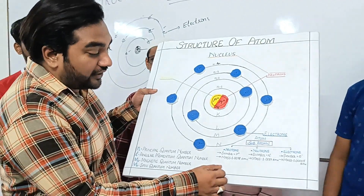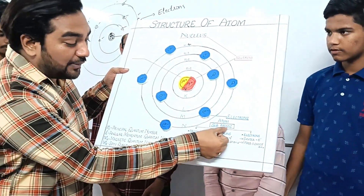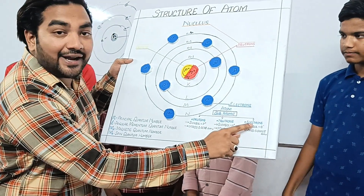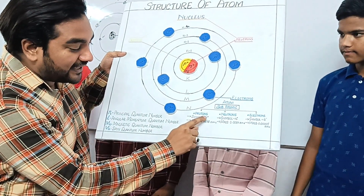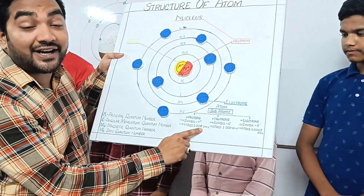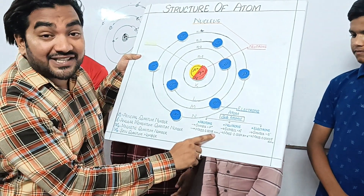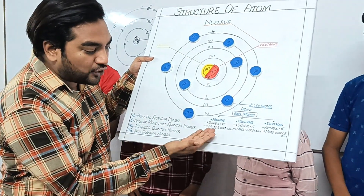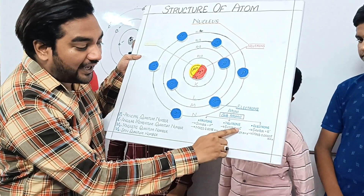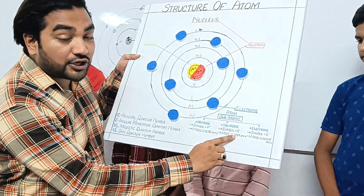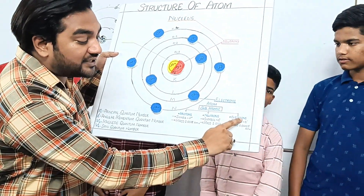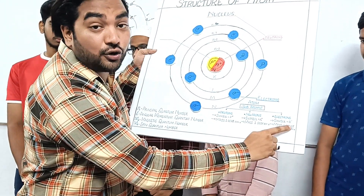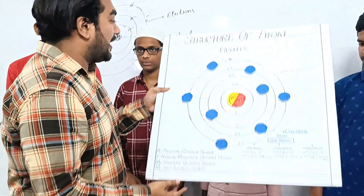What he explained: the atom has subatomic particles — protons, neutrons, and electrons. For protons, the symbol is P+ and the mass is 1.0078 atomic mass units. For neutrons, the symbol is N0 and the mass is 1.0087 atomic mass units. For electrons, the symbol is E− and the mass is 0.00005 atomic mass units.